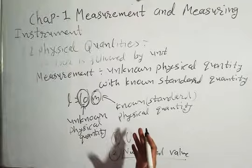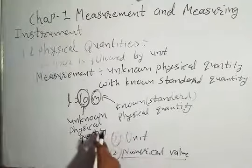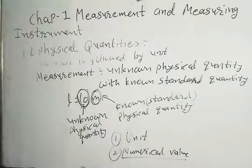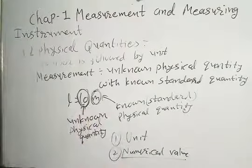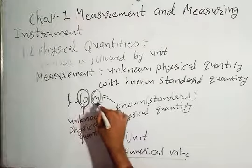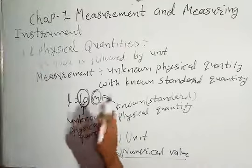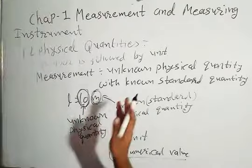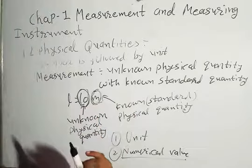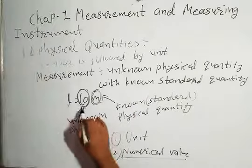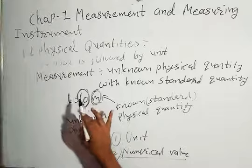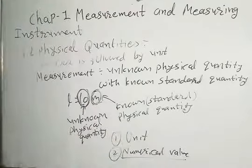In all measurement, we multiply the unknown physical quantity with the known physical quantity. We know that one meter is the unit of length. So we multiply that unit — if the measurement is 10, we multiply with one meter; if the measurement is 15, then we multiply with 15.